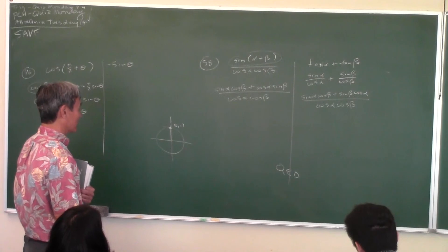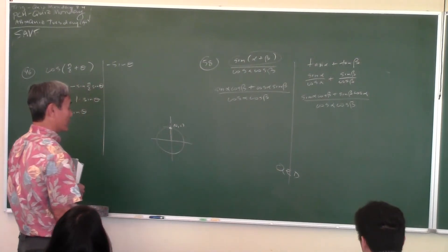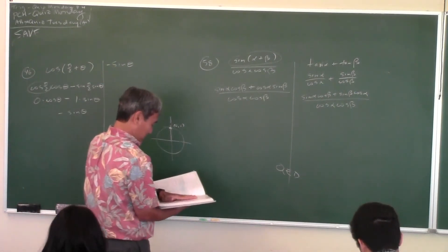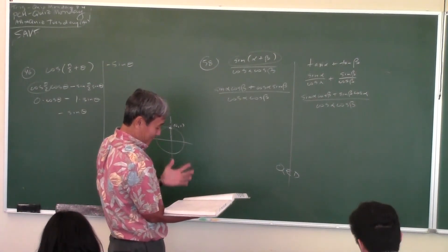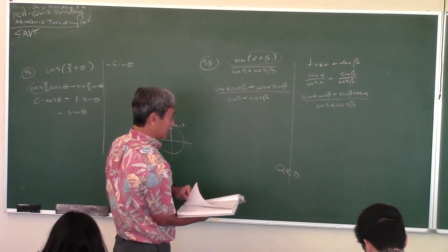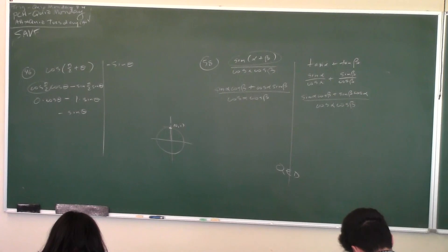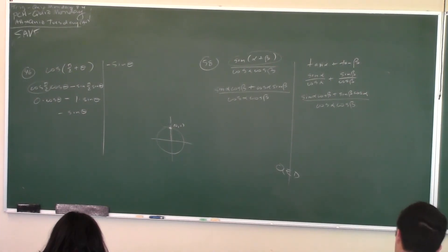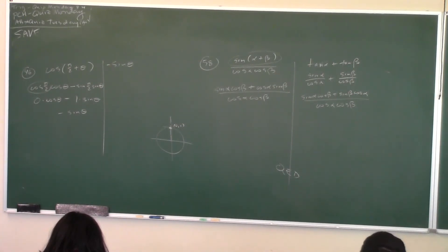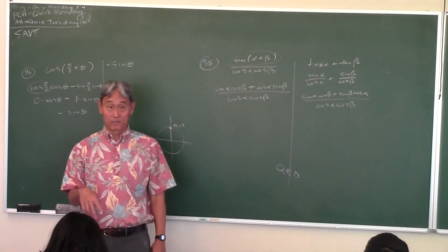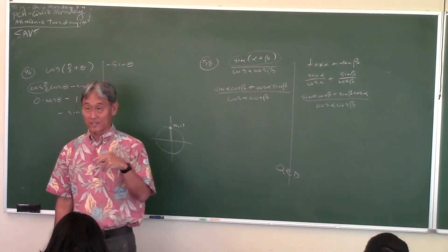It's the same techniques we've been using: change everything to sine and cosine, make the least common denominator, apply the identity — boom, it comes out. Tonight's homework looks pretty easy but you just have to practice memorizing these identities. Hopefully you don't have to look at the identity sheet after a while. I'm going to let you use the rest of the time — about 20 minutes — to finish tonight's homework.